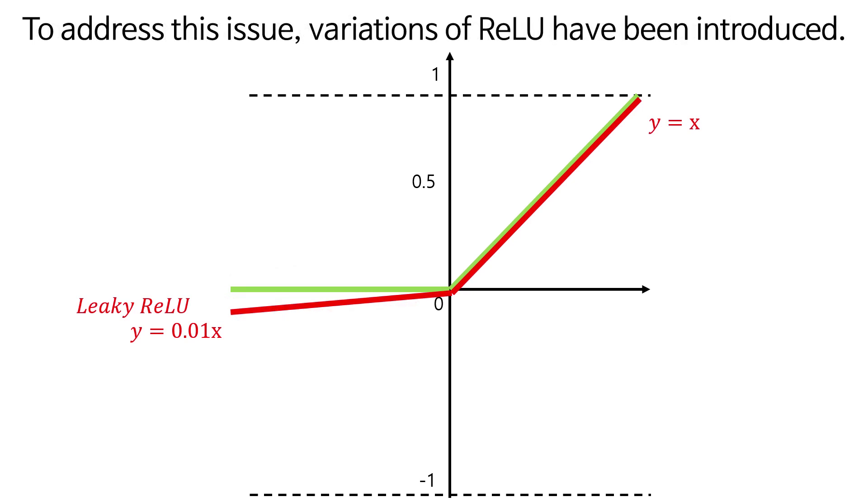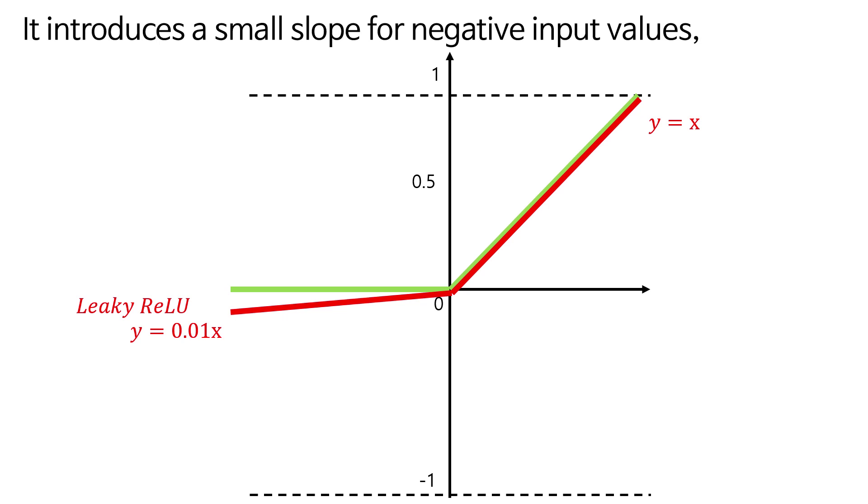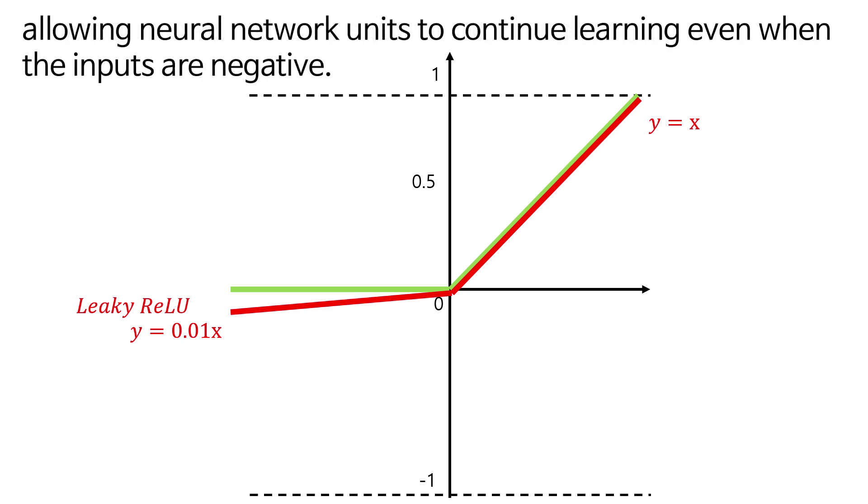It introduces a small slope for negative input values, allowing neural network units to continue learning even when the inputs are negative.